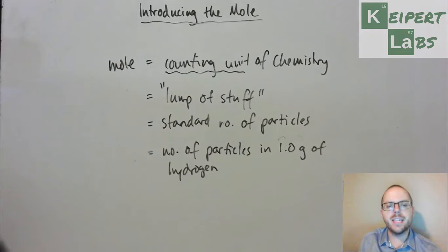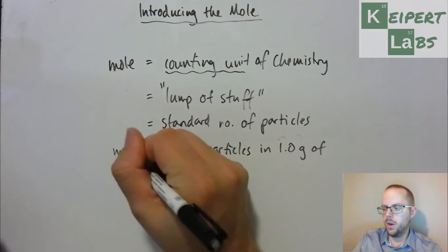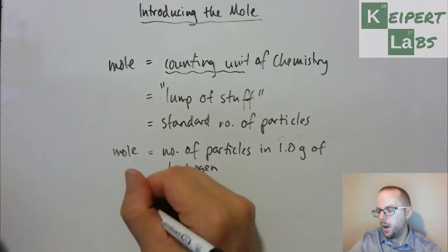Because they said, if a hydrogen atom has a relative mass of 1, then let's just kind of scale it up and say, if we could measure out a sample of hydrogen at 1 gram, that would be a particular number of particles. And let's call that number of particles the mole, a mole of particles.